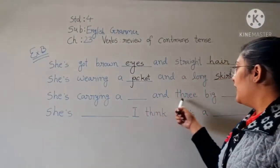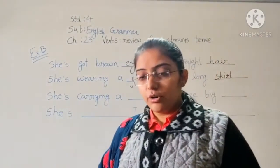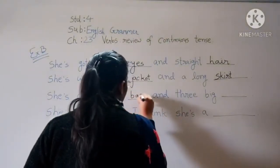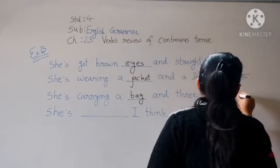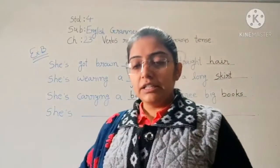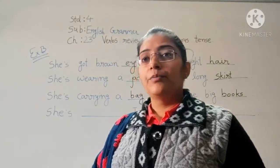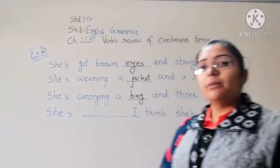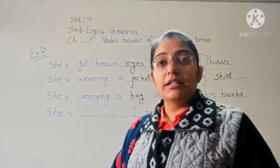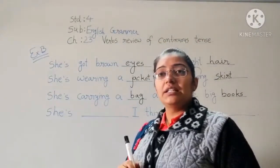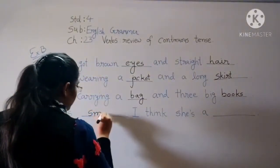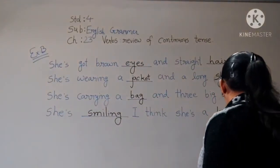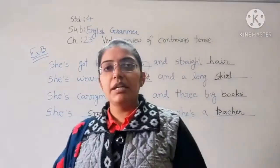She is carrying a bag and three big books. Picture mein dekh sakte ho — uske haath mein ek bag hai aur kuch kitaabein hain. She is smiling and I think she is a teacher. Hamare paas do options bache the — teacher aur smiling — toh pehle blank mein 'smiling' aur phir 'she is a teacher.' Exercise B completed.